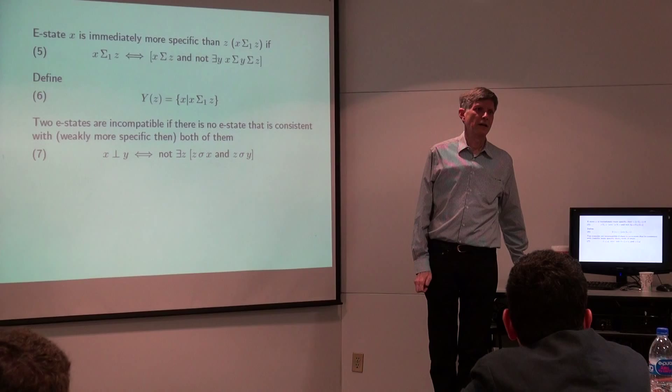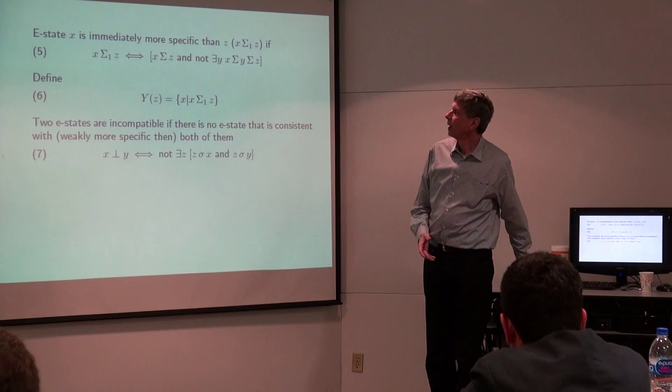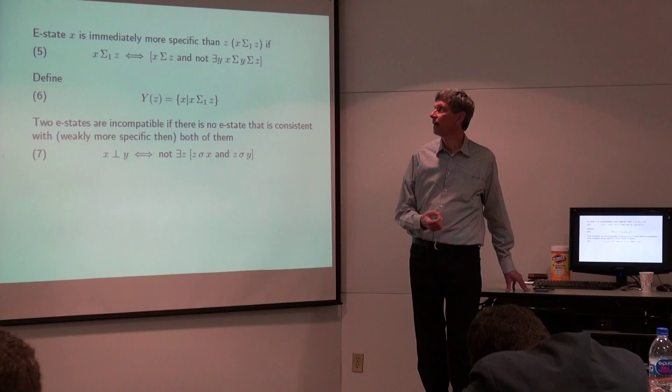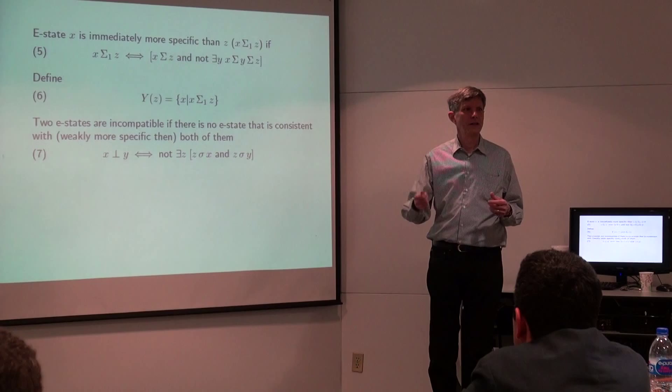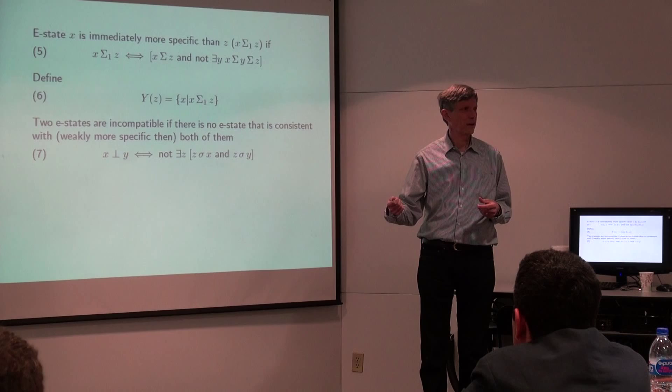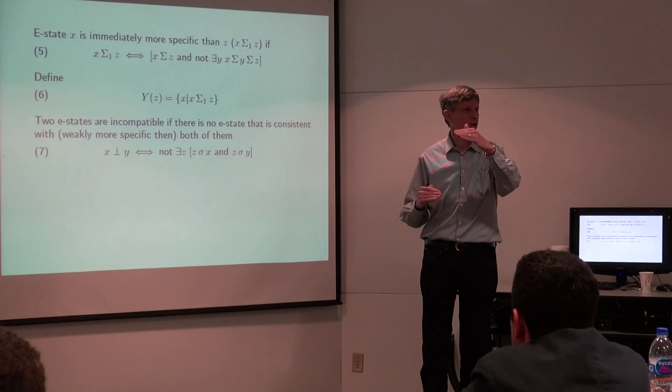I've already told you that I think evidence is finite. Given that evidence is finite, I obviously can't have an infinite chain of less and less specific evidential states. In fact, my evidential states are going to have a rank that's a finite integer. If I take away more and more bits of evidence, I should decrease in rank.